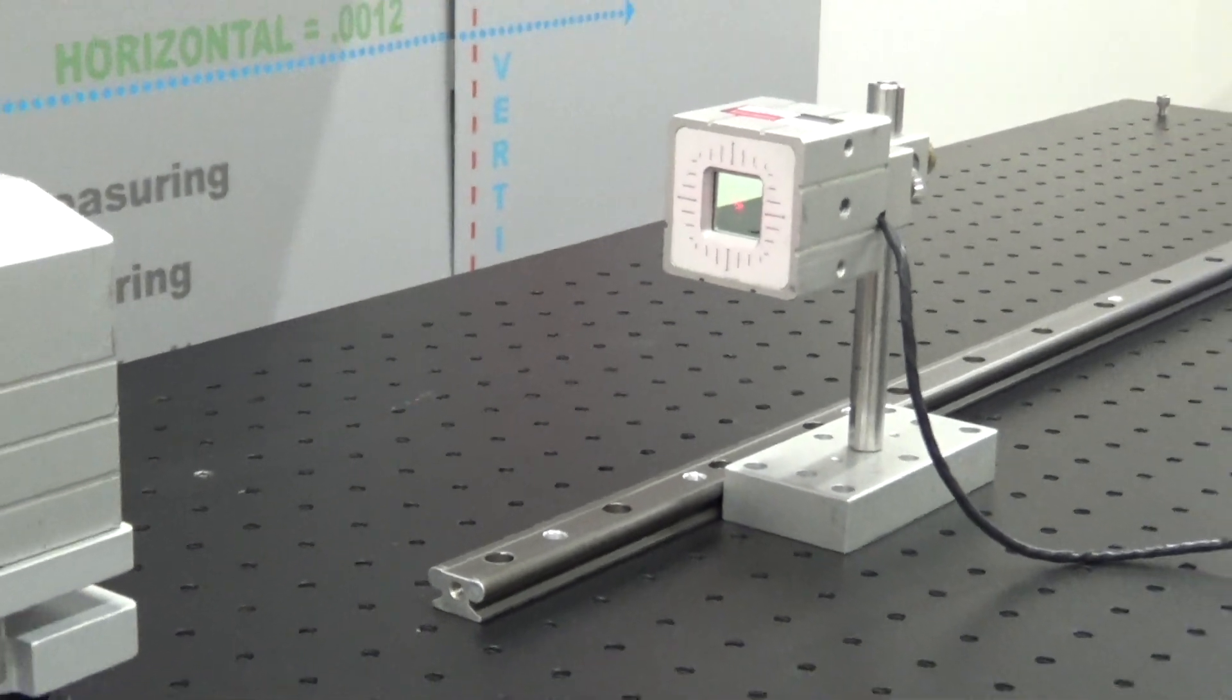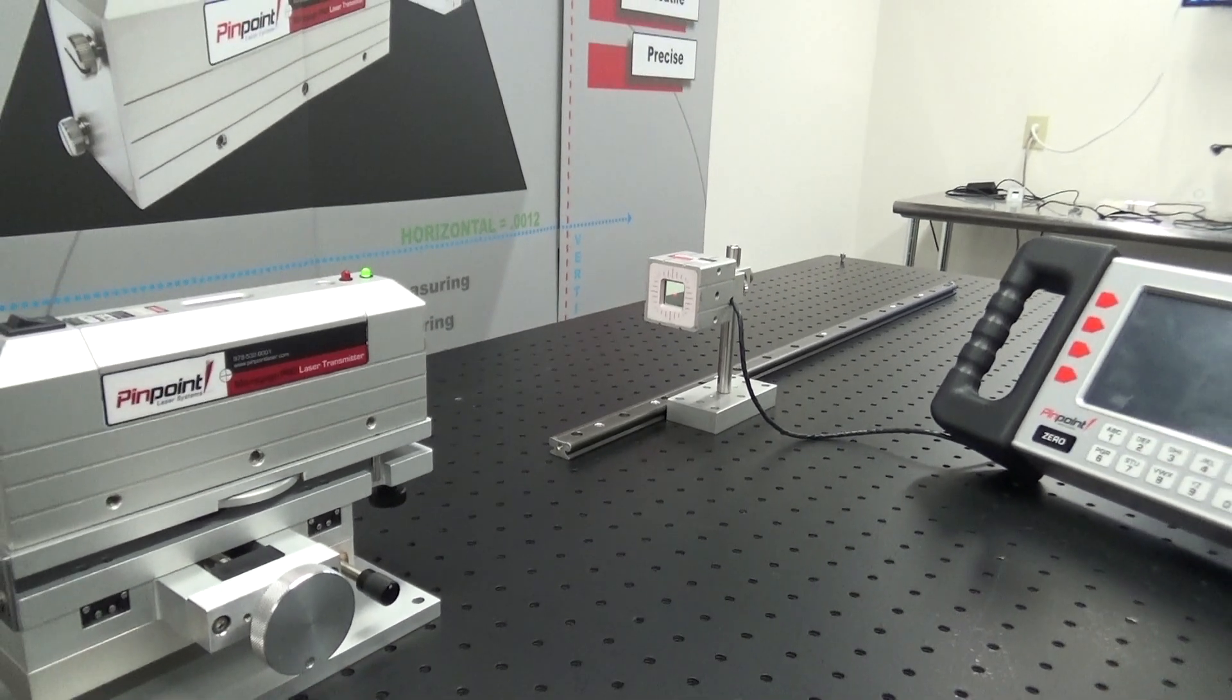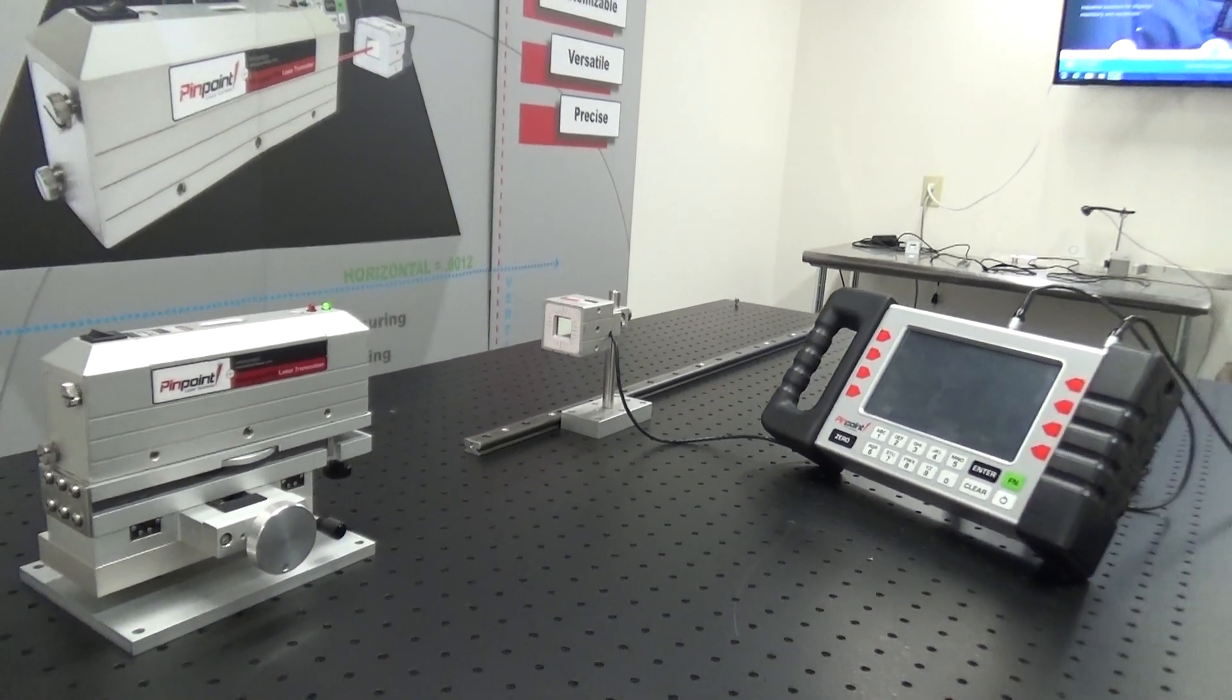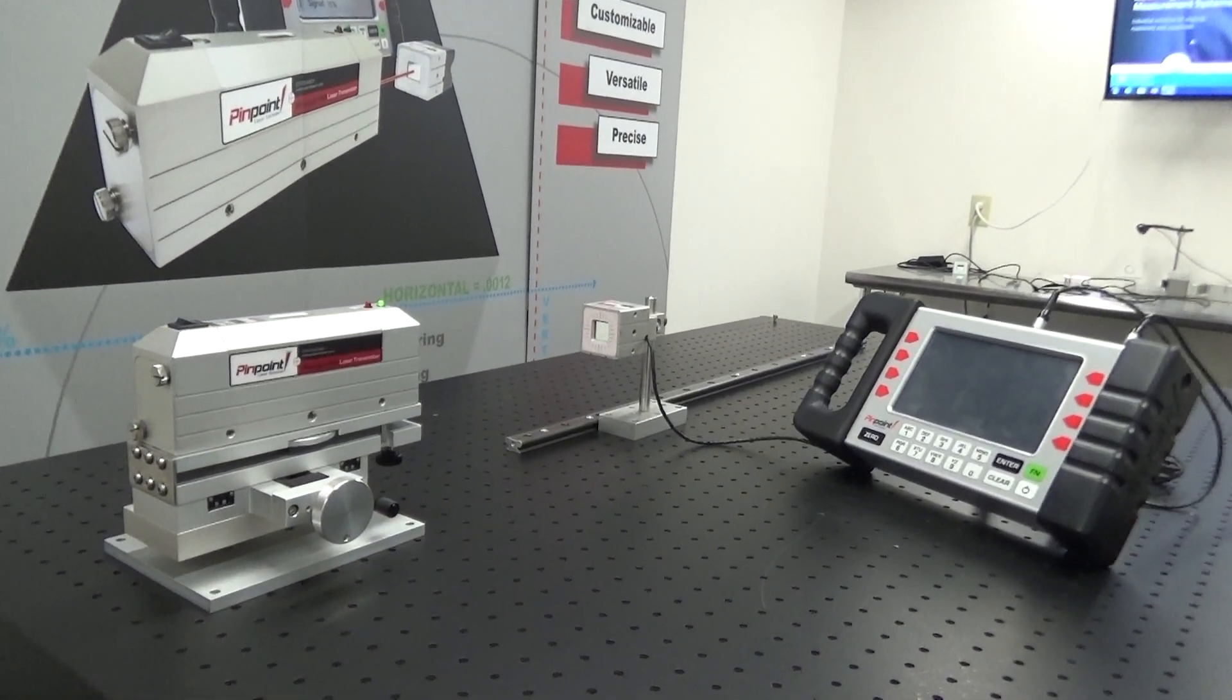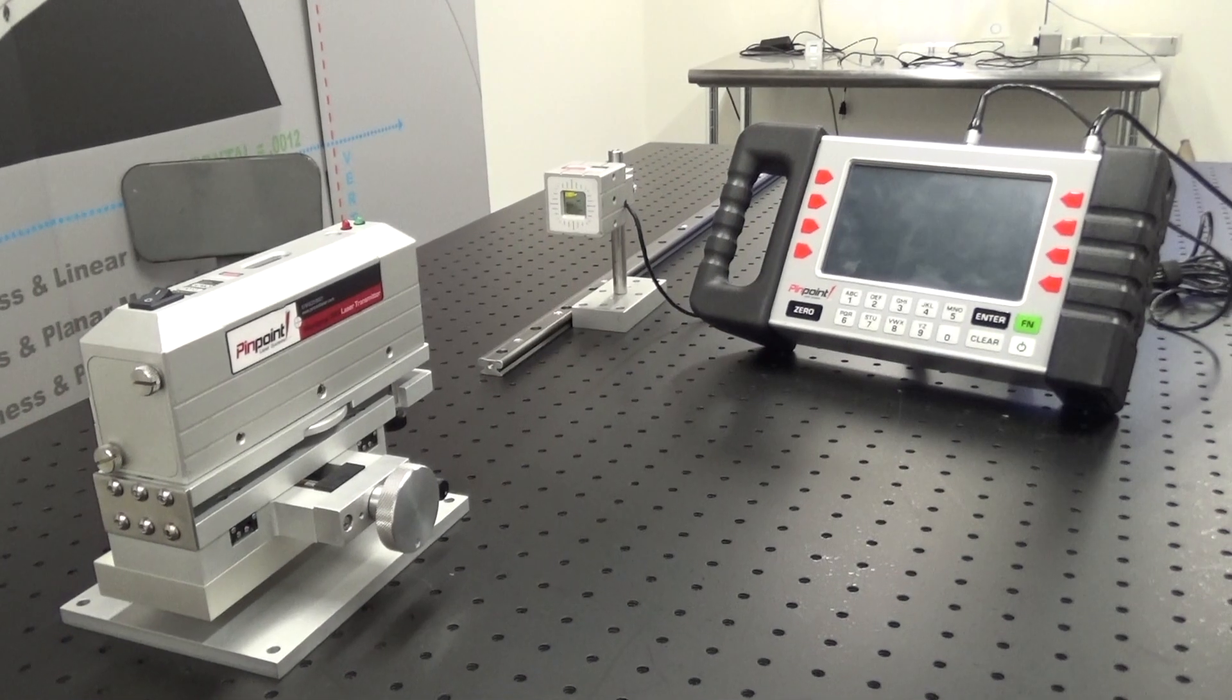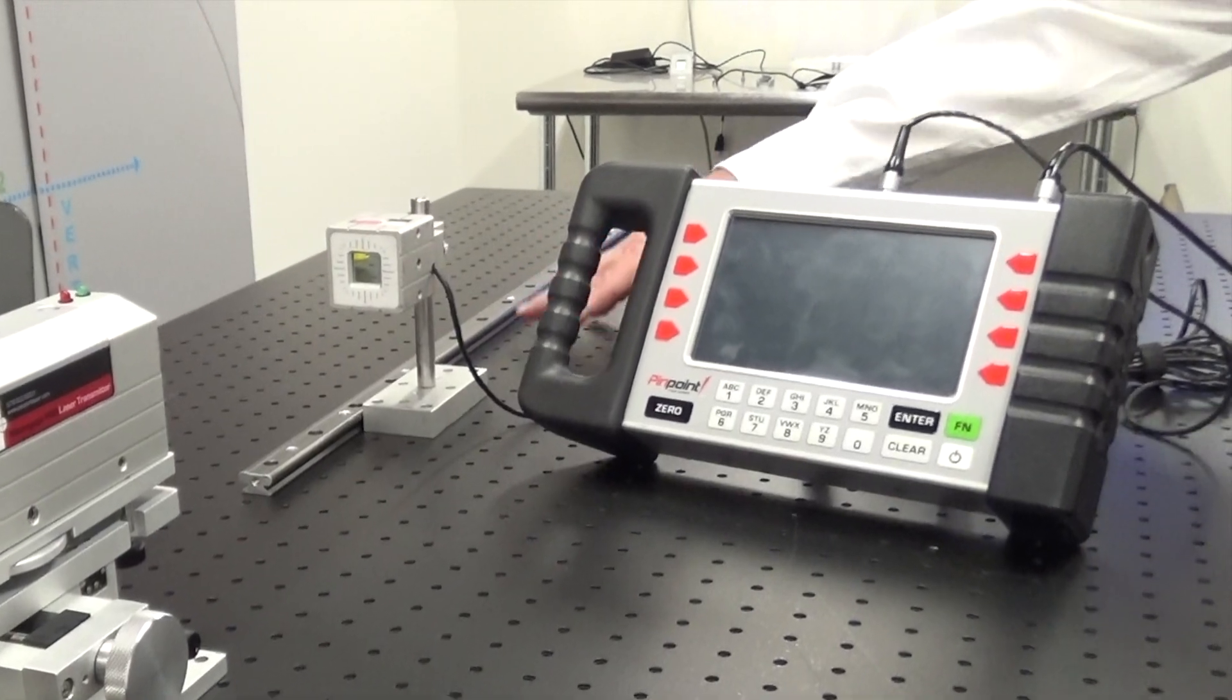This demonstration will include the application setup or bucking in process for straightness, as well as the straightness application itself. Bucking in is the process that adjusts the laser beam so it runs parallel to the surface being measured, in this case a rail and the tabletop.